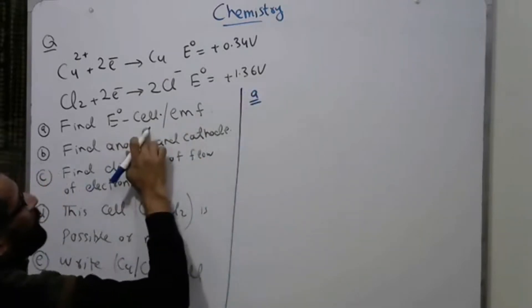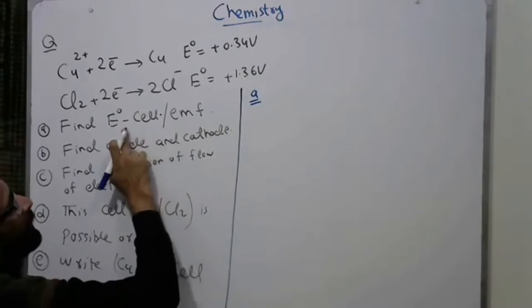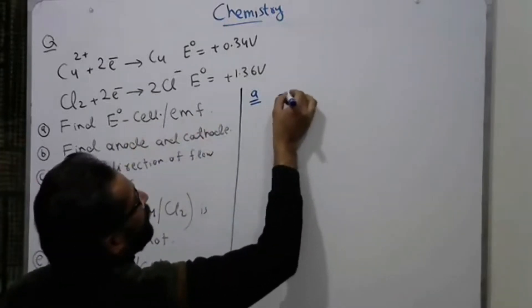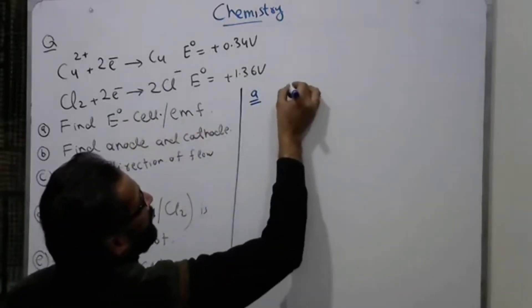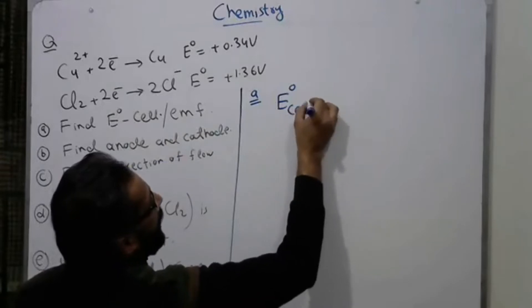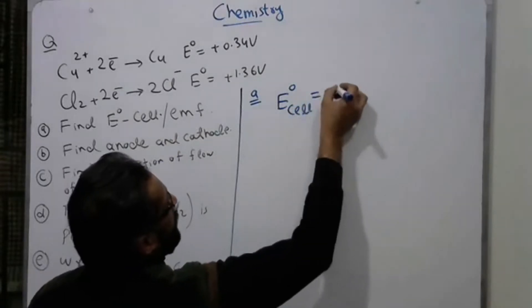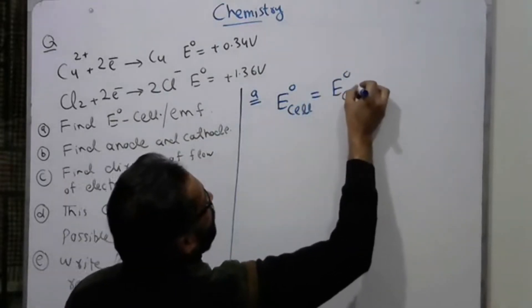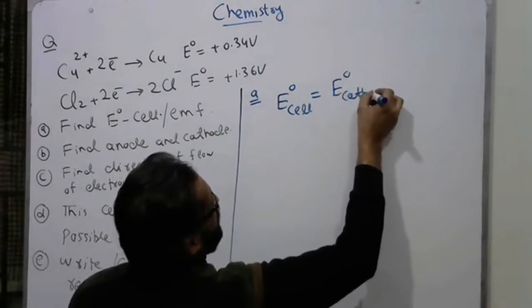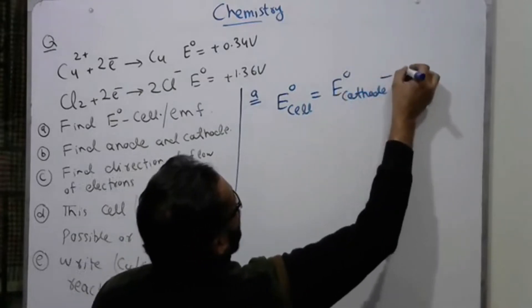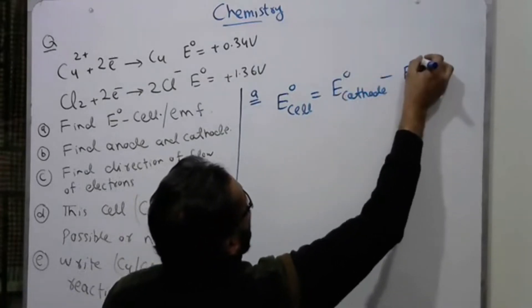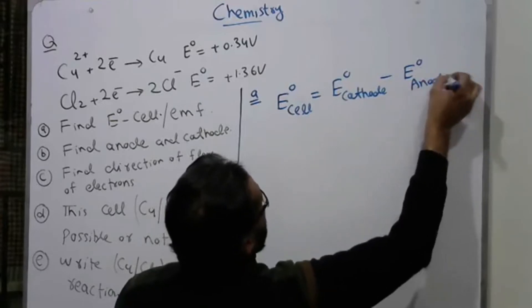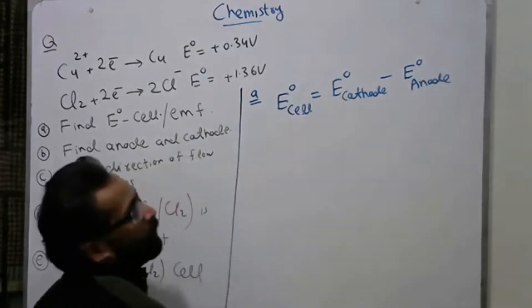To find the EMF or E° cell, you use the formula: E° cell = E° cathode minus E° anode.